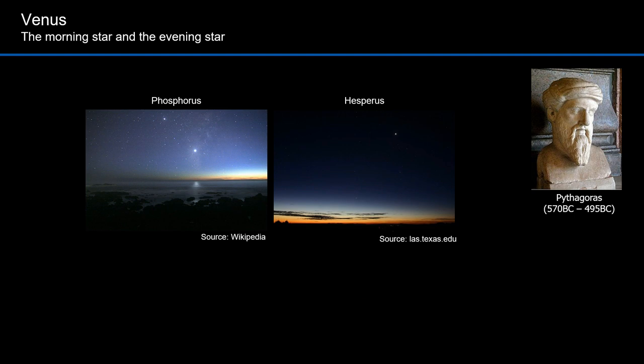After the sun and the moon, Venus is the brightest object in the sky. It was popularly thought to be two separate stars, Phosphorus in the morning and Hesperus in the evening.